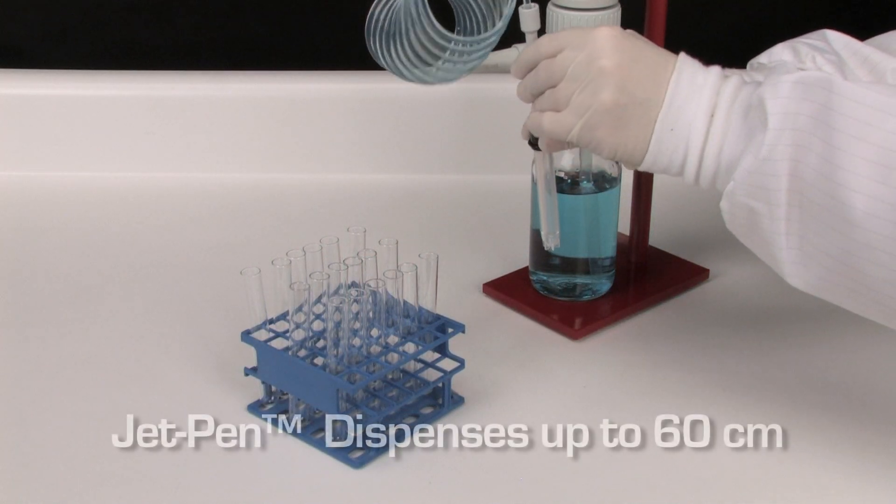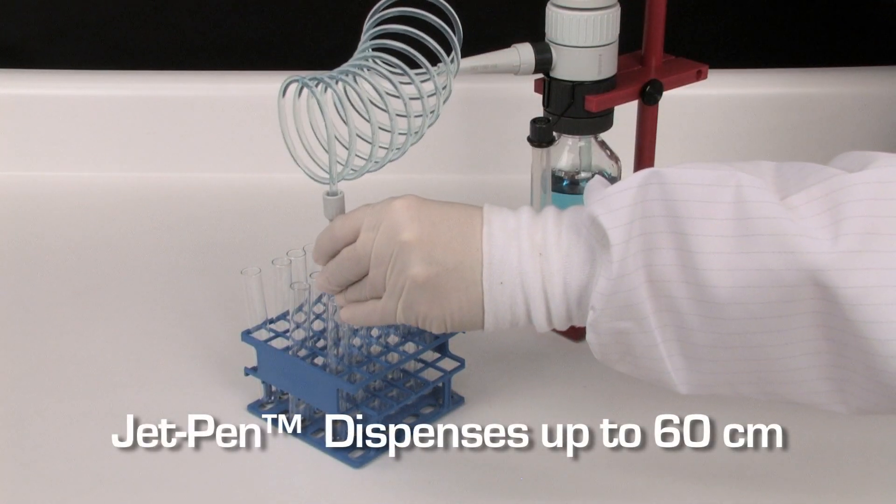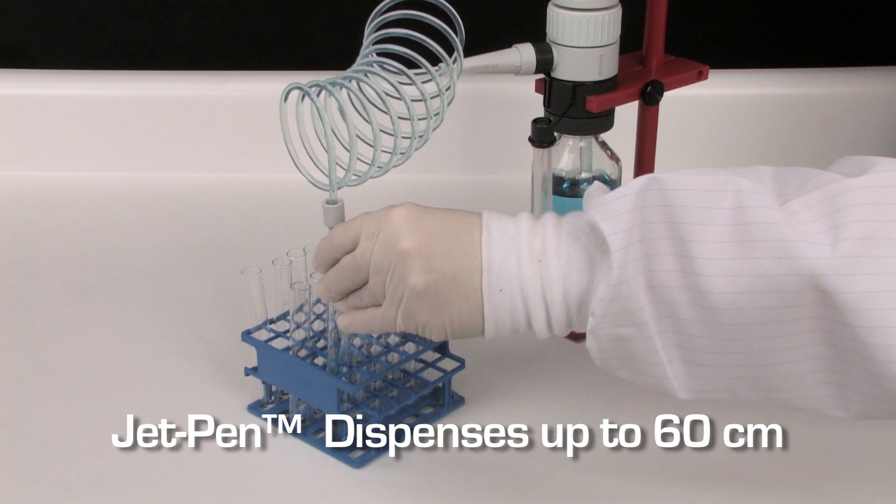Spiral tubing and the delivery Jet-Pen help dispense material into vessels with maximum comfort within a 60 centimeter distance.